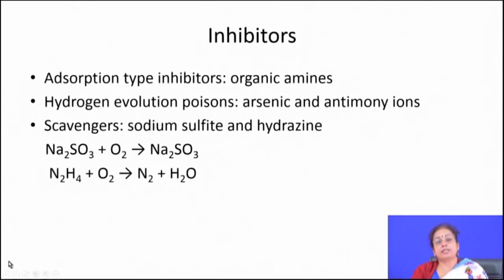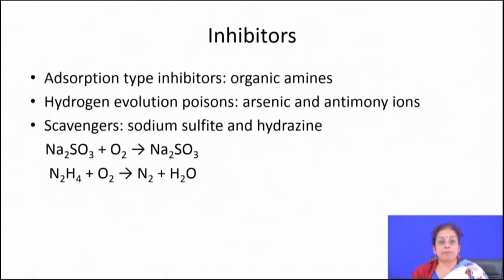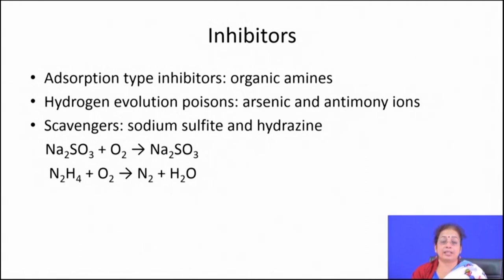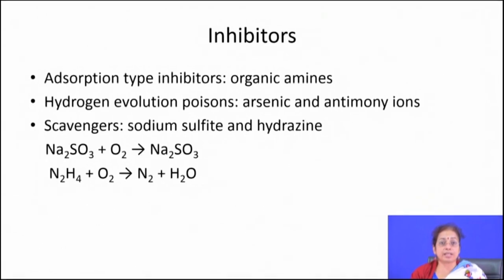You can reduce temperature and velocity to alter the environment, but sometimes these are not under your control. In that case you can apply inhibitors to reduce the aggressiveness of the media. Inhibitors added to the solution either reduce the aggressiveness of the environment, remove species that cause corrosion, or get adsorbed over the surface and by that process protect the surface. There are different types of inhibitors: adsorption type inhibitors, hydrogen evolution poisons, and scavengers.